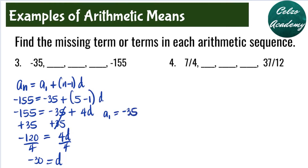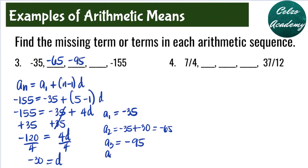Our a sub 1 is negative 35. Adding the common difference of negative 30 each time: a sub 2 is negative 35 plus negative 30, which is negative 65; a sub 3 is negative 95; a sub 4 is negative 125; and a sub 5 is negative 125 plus negative 30, which is negative 155. Therefore the arithmetic sequence is negative 35, negative 65, negative 95, negative 125, and negative 155, with a common difference of negative 30.